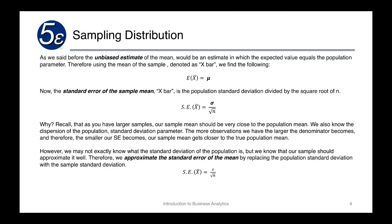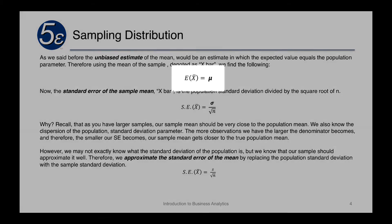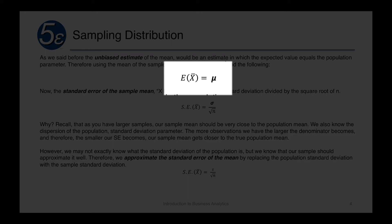As we said before, an unbiased estimate of the mean would be an estimate in which the expected value of x bar equals the population parameter. Therefore, using the mean of the sample, denoted as x bar, we would find the following, that the expected value of x bar is equal to mu.